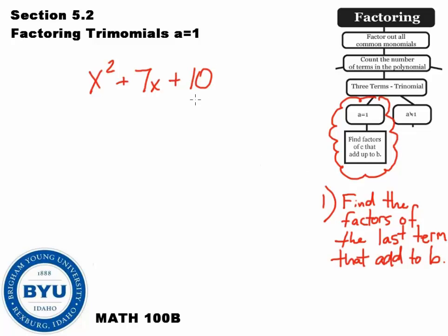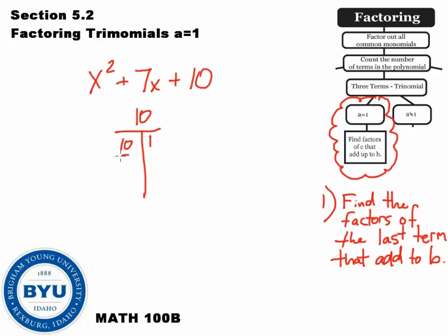Basically, if we listed these out as a, b, and c: a is 1, b is 7, and c is 10. One thing I like to do is take the c value and write out its factors. What numbers go into 10? There's 10 and 1, and there's 5 and 2. Create a factor chart: 10 times 1 is 10, and 5 times 2 is 10. These are our factors of 10. We want to know which set of factors will add to 7. We need to find the factors of c that add to 7.